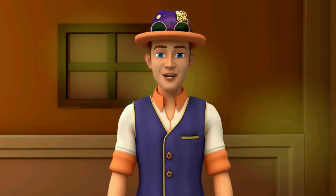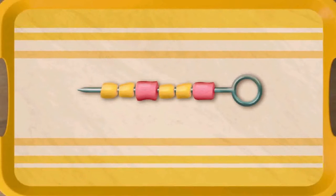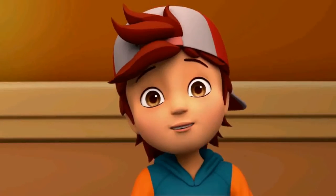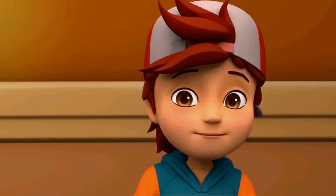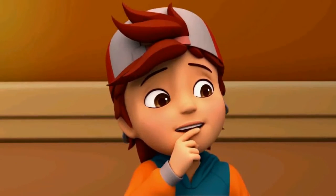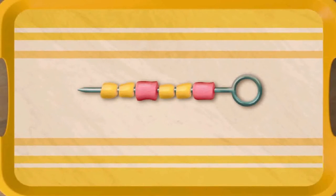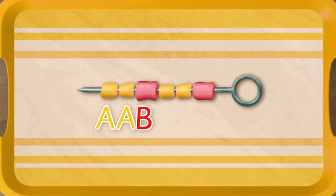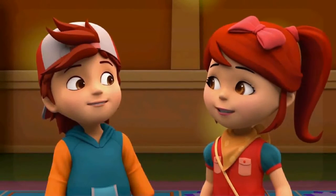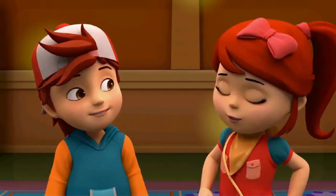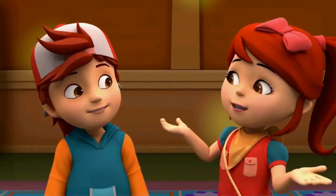What about these marshmallows, Jax? Want to try? There are only two colors in both of them, but this looks like a hard question. This one has yellow, yellow, red — yellow, yellow, red. So will it be A-A-B, A-A-B? I think you're doing it right, Jax. After all, you have a genius for a sister.